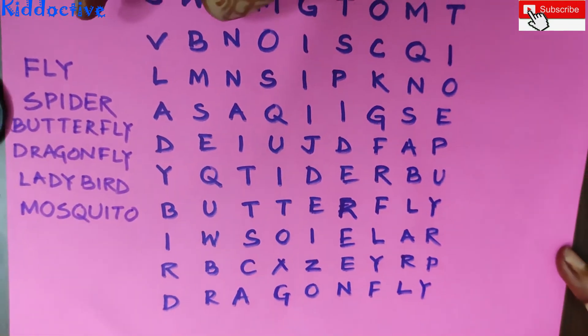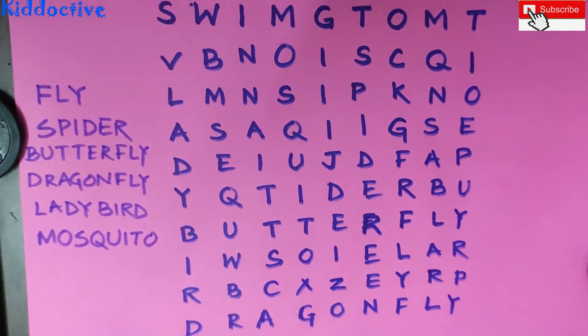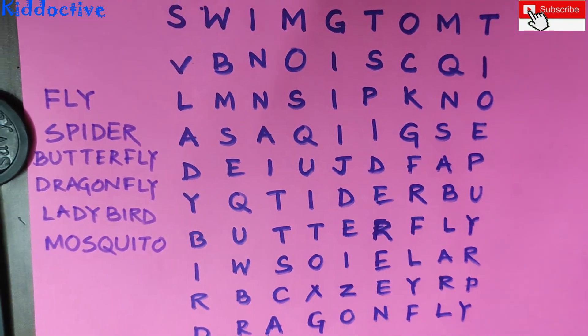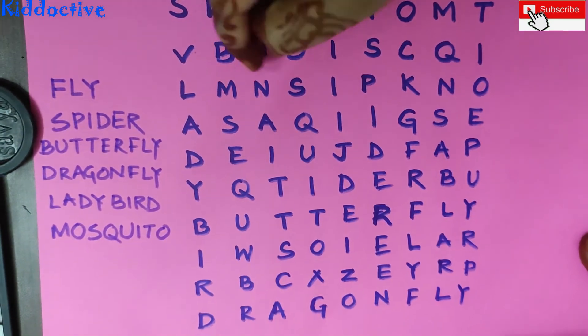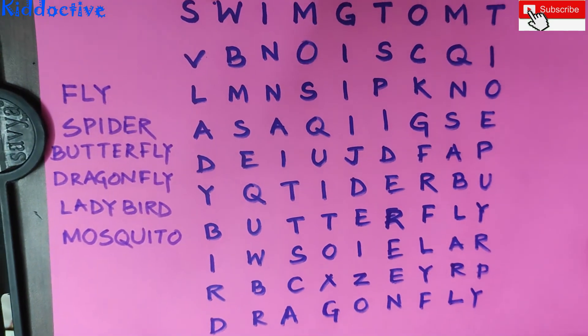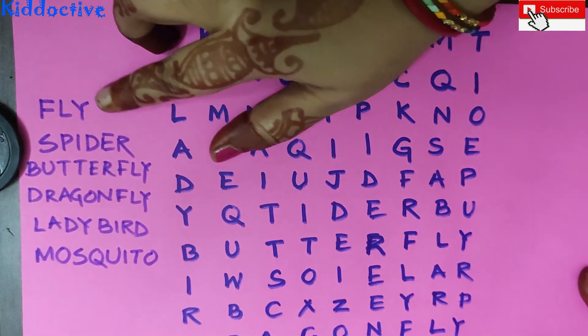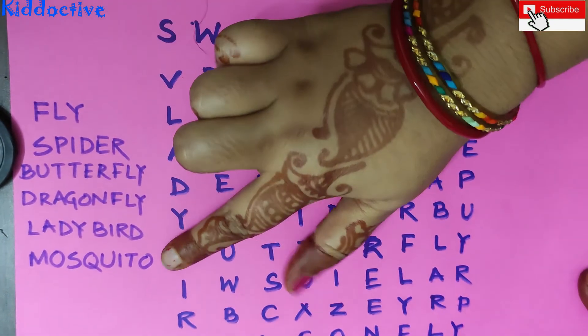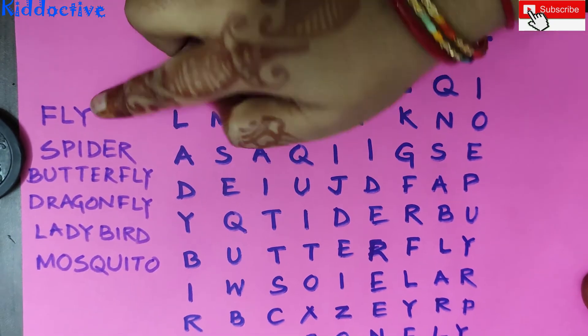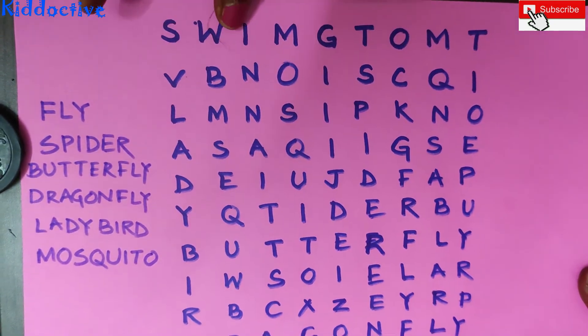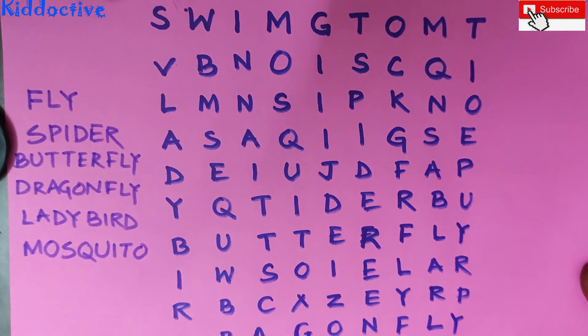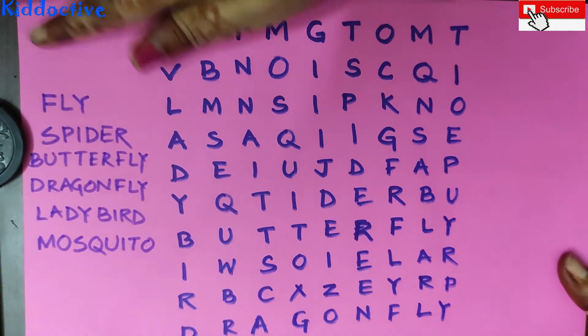Now we have another one. I have a grid. What do we need to find? Insects. So we have 6 insects and now we will find them. Okay?